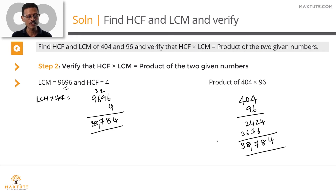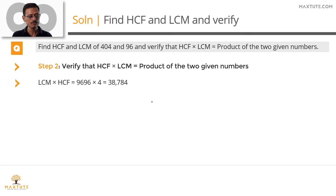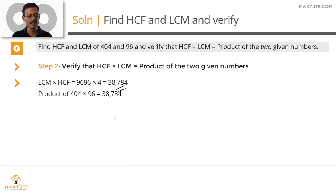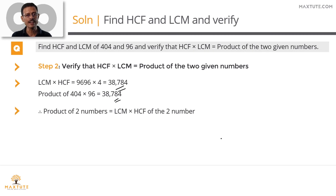To summarize: the LCM and HCF product is 38,784, and the product of the two given numbers is also 38,784. We have verified that the product of the LCM and HCF of two numbers equals the product of the two numbers.